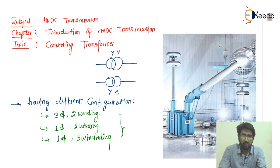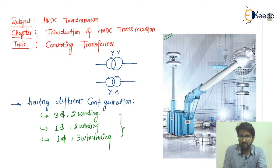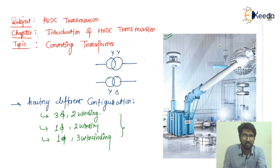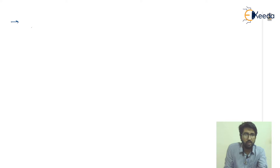This is the general diagram and representation. If I talk about the line diagram, we use these representations of the converting transformer. On the right-hand side, we generally represent our converting units, which I have already explained in the previous lectures. Now I am moving to the next point and will add the different points one by one.